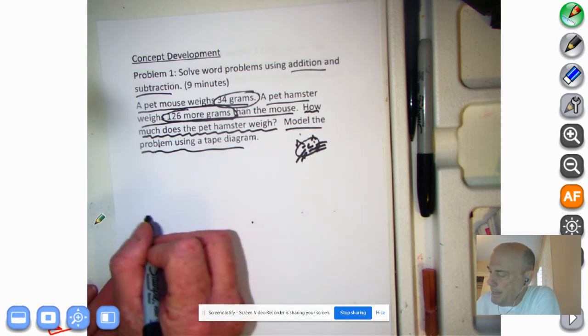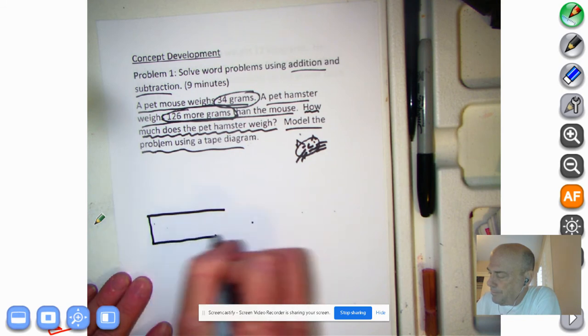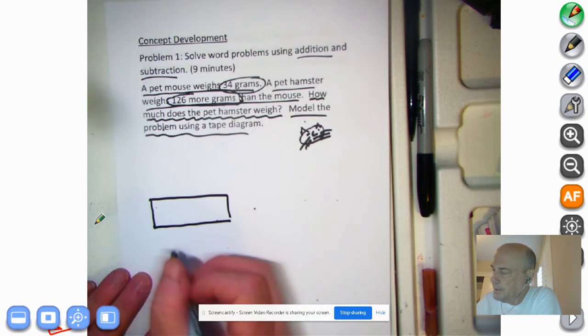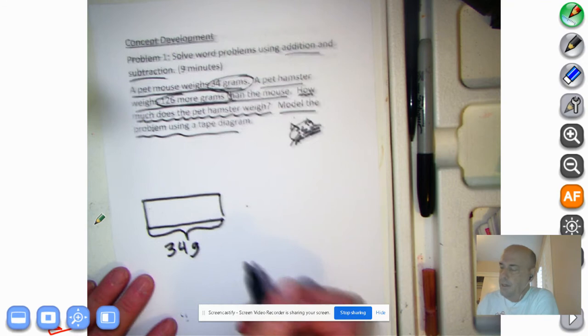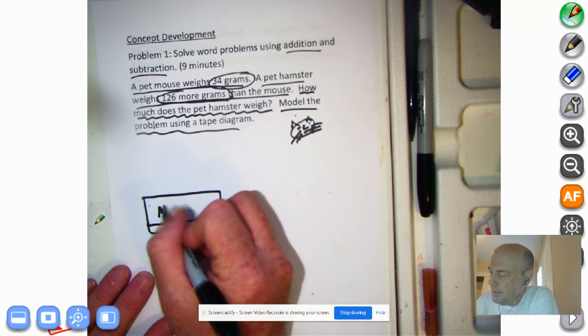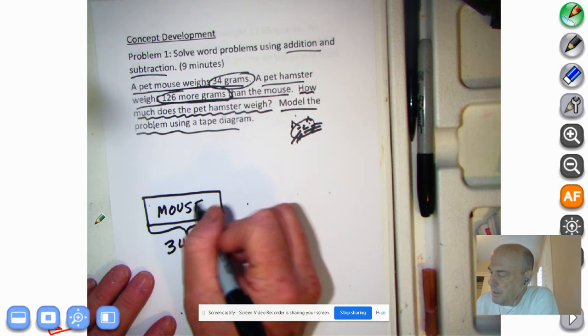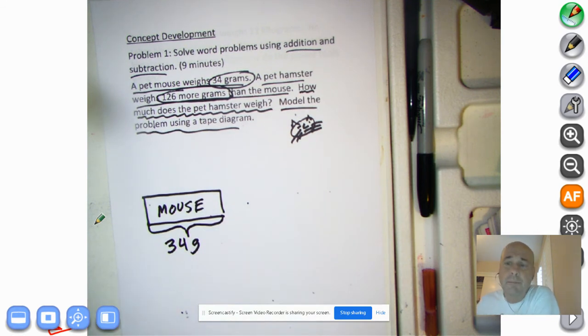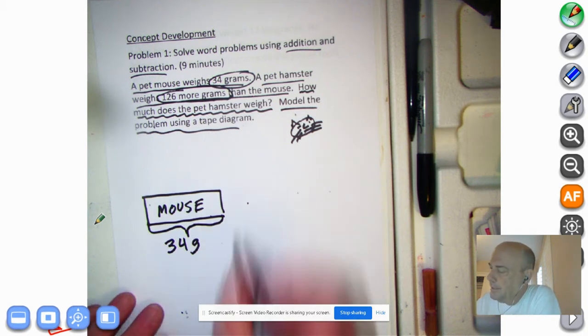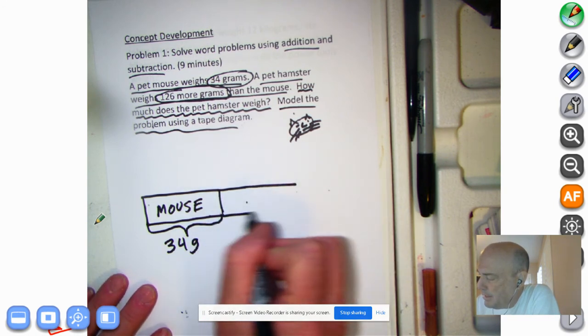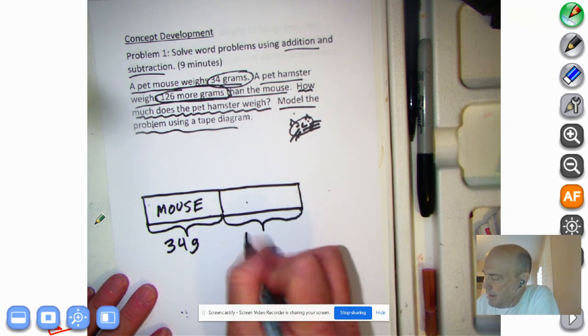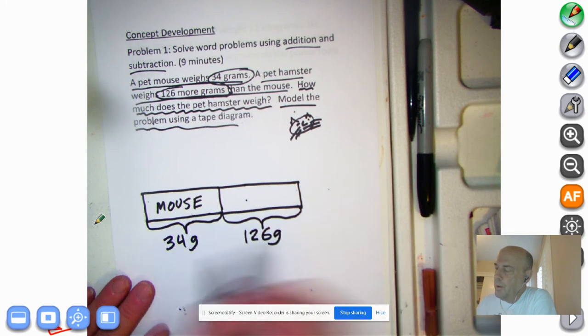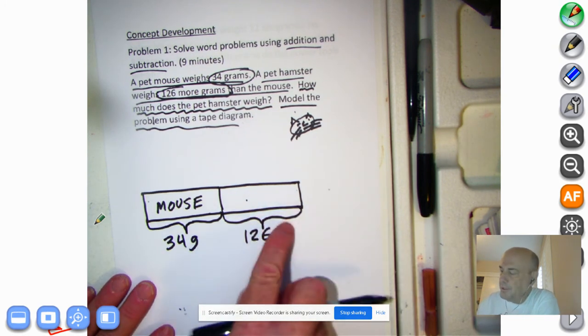You're copying along with me on your whiteboard or scratch paper. So let's go ahead and show how much the pet mouse weighs. And the mouse weighs 34 grams. So we're going to make this. And I can even put in a mouse. Just so you know that's how much the mouse weighs. Now, what about that hamster? That big chubby hamster, he weighs 126 grams more than the mouse. Okay, so we're going to add on that 126.